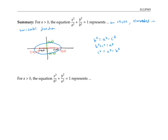What if we still have a > b, but we divide y² by the larger number a² and x² by the smaller number b²? This reverses the roles of x and y. We end up with the major axis along the y-axis, stretching between (0, a) and (0, −a), while the minor axis runs along the x-axis between (−b, 0) and (b, 0), and the foci are on the y-axis. In this case the ellipse is elongated in the vertical direction.